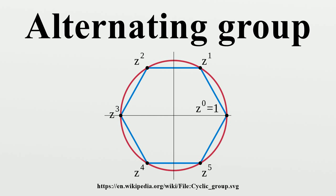Basic Properties: For n greater than 1, the group An is the commutator subgroup of the symmetric group Sn with index 2 and has therefore n!/2 elements.